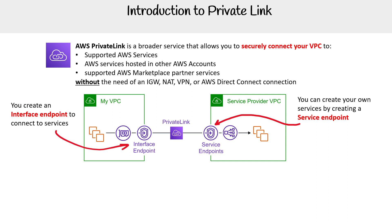There are a couple of components I don't have text on the slide for, but generally when you're using Private Link you're going to see an ENI — an Elastic Network Interface card. That is the way it's going to work, and it's deployed in a VPC.